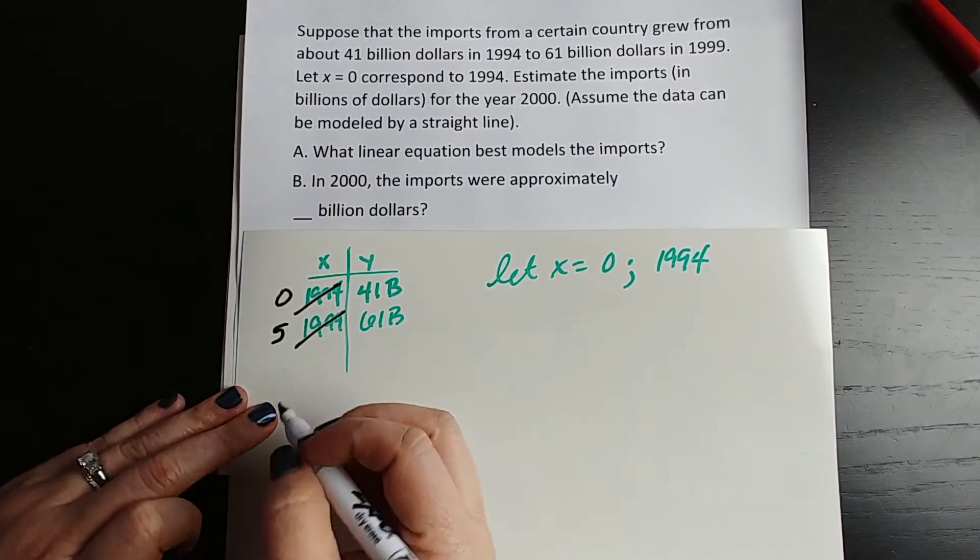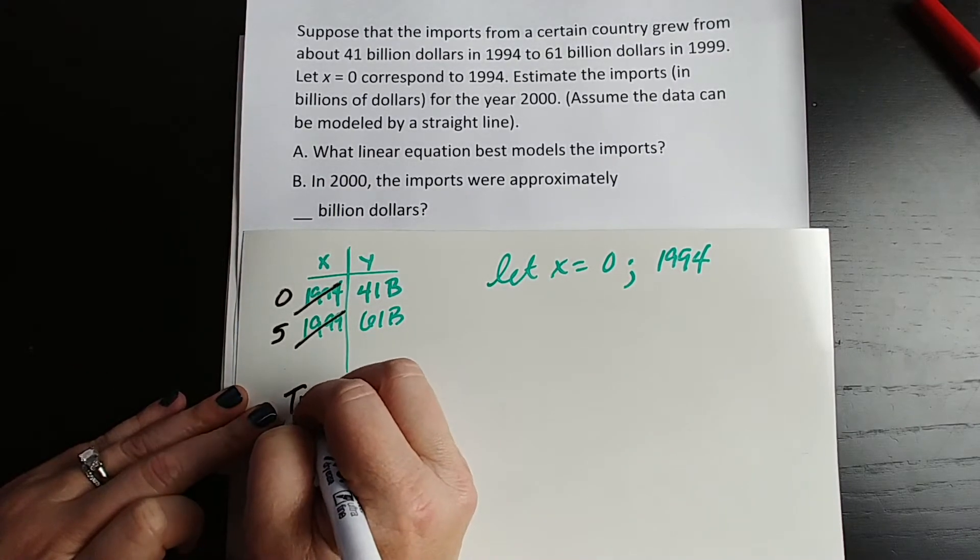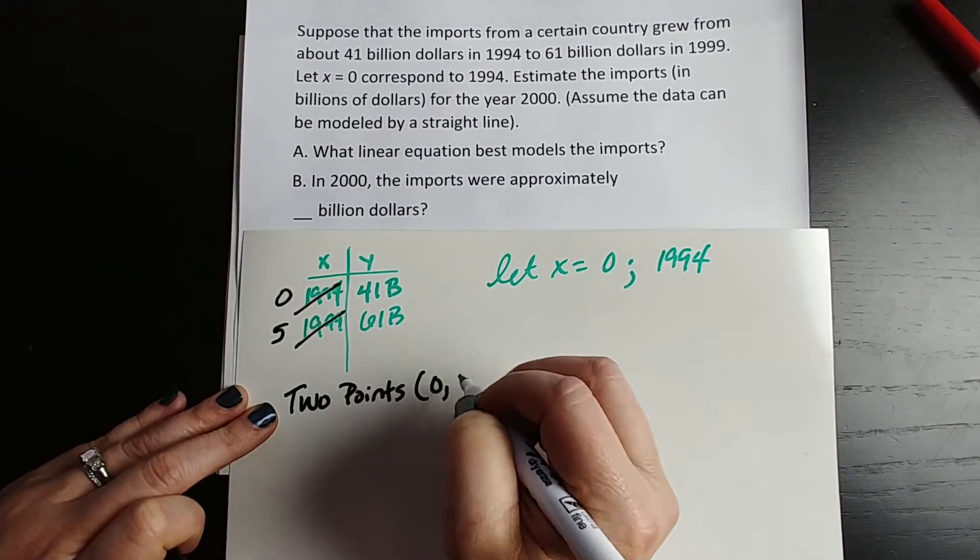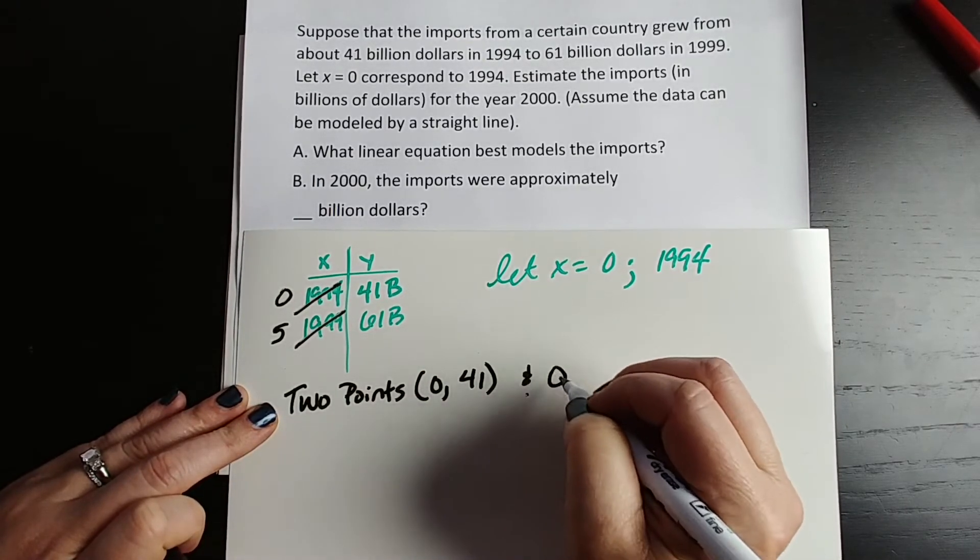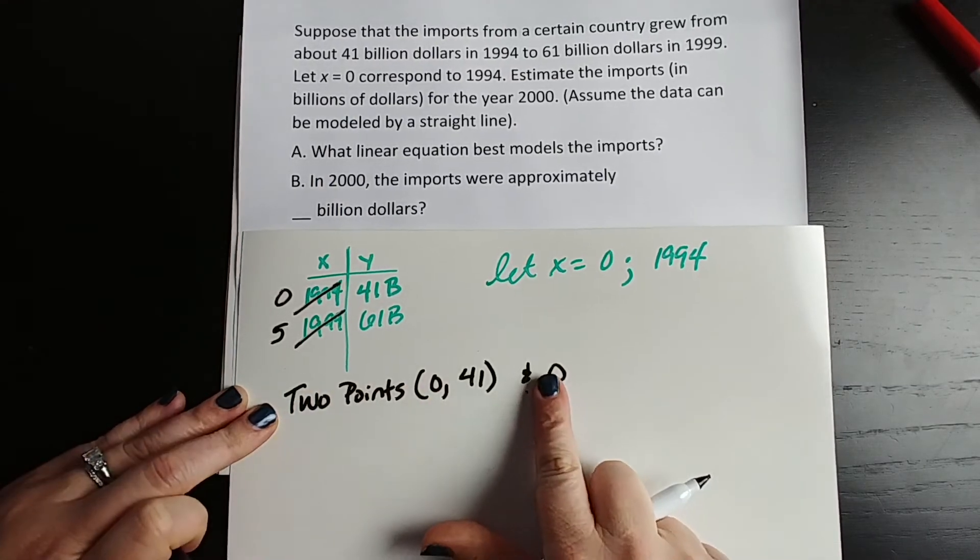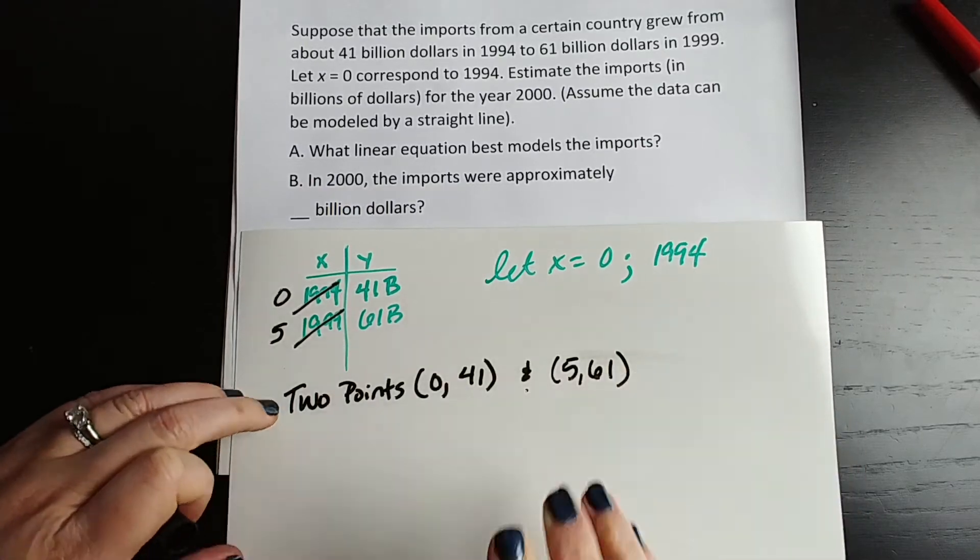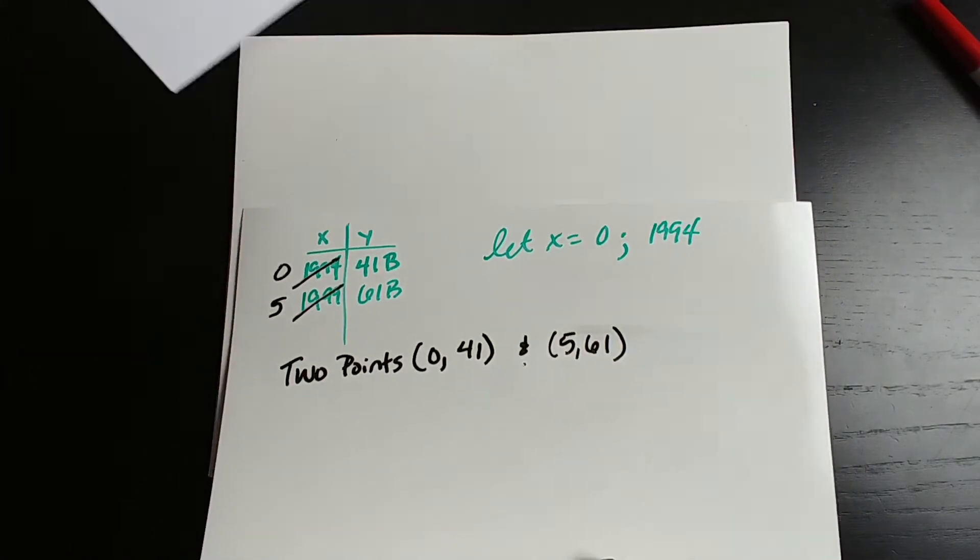So let's look at the two points we have. So we have two points, if we take these. We have 0, 41, and we have 5, 61. So taking away the problem now, all it wants us to do is find the linear equation that goes through these two points.